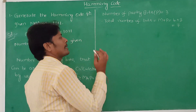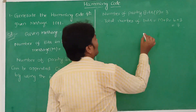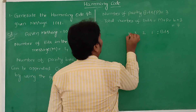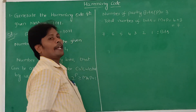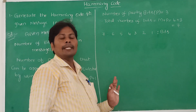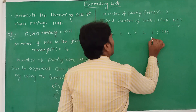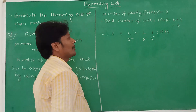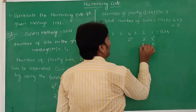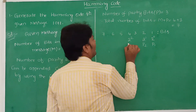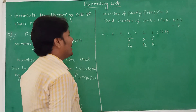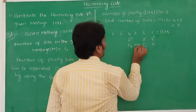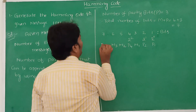Now we have to write 7 bit positions from right to left: positions 1, 2, 3, 4, 5, 6, 7. Parity bits are always located at power-of-2 positions. Position 1 is 2 power 0, position 2 is 2 power 1, and position 4 is 2 power 2. So parity bit P1 is at position 1, parity bit P2 is at position 2, and parity bit P4 is at position 4. In the remaining positions, the message bits are located: message bit 1, message bit 2, message bit 3, and message bit 4.